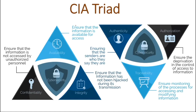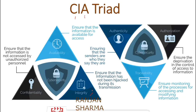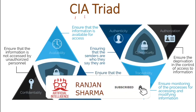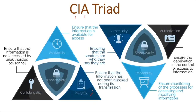This brings us to the CIA Triad — a very well-known term in cybersecurity. C means Confidentiality, I means Integrity, and A means Availability. Confidentiality means our information is not being accessed by any unauthorized individual — only those who are authorized can access it. Integrity ensures that the attacker is not able to hijack or modify our information, so the information remains as it is. Availability ensures the information is always accessible.